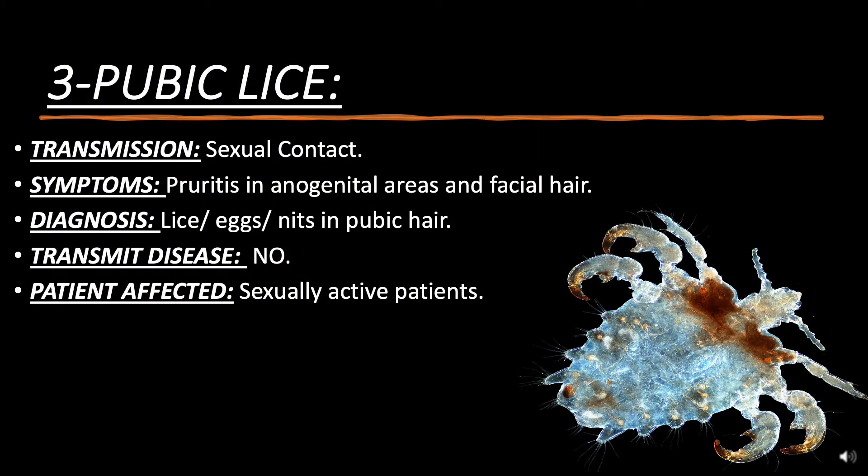Pubic lice: Transmission is through sexual contact. Symptoms include pruritus in the anogenital areas and facial hair. Diagnosis is by finding lice or nits in pubic hair. Pubic lice do not transmit disease. Patients affected are sexually active individuals.